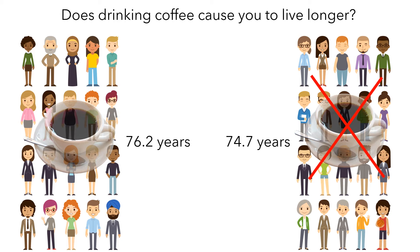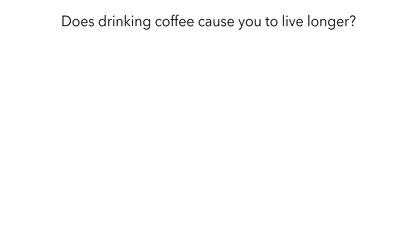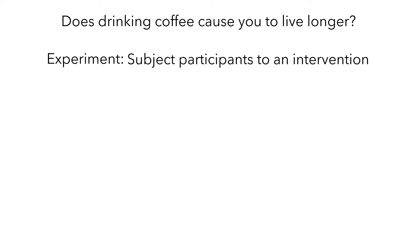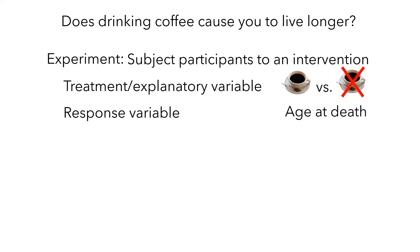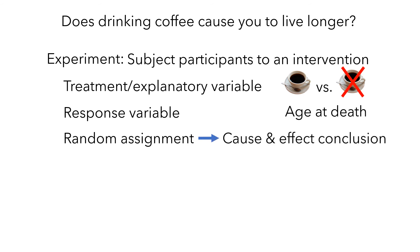Now let's think about the two research questions we've looked at. The second research question was, does drinking coffee cause you to live longer? To answer this question, we use a technique called an experiment. An experiment is a technique in which researchers subject participants to an intervention — in our example, it was drinking coffee or avoiding coffee. The different levels of the intervention are called the treatment or explanatory variable. Then the researchers measure values of a response variable — in our experiment, it was the age of the participants when they died. Experiments typically involve randomly assigning participants to levels of the treatment variable, which usually allows us to make a cause-and-effect conclusion.